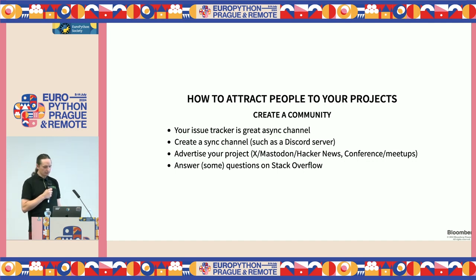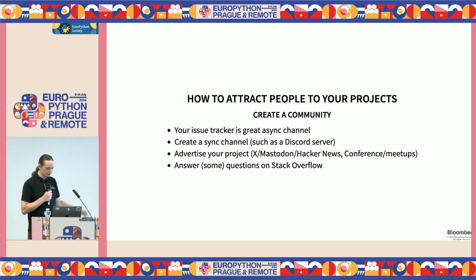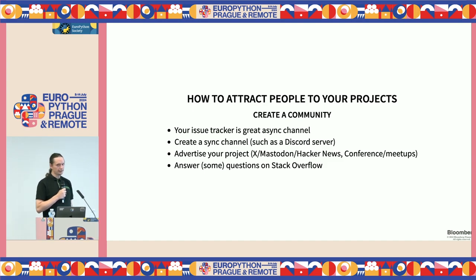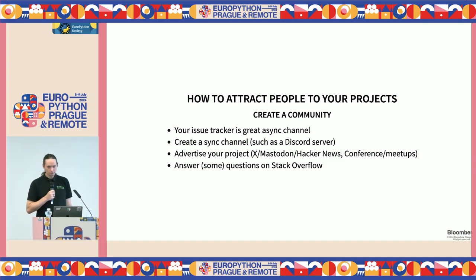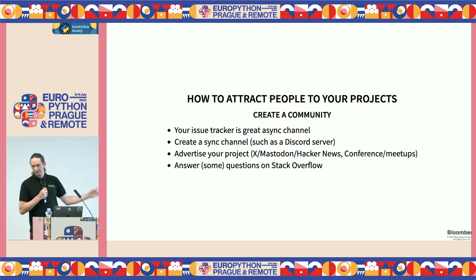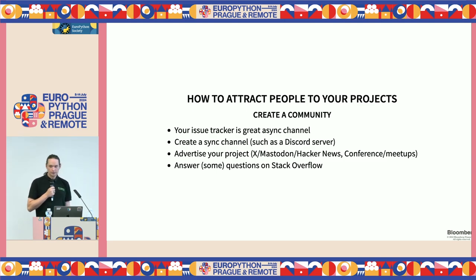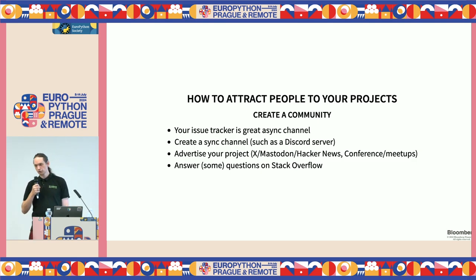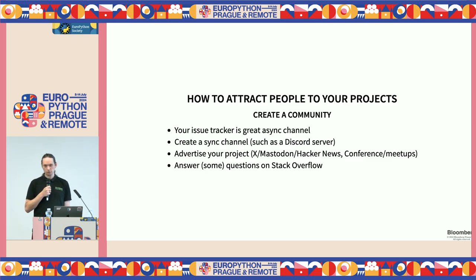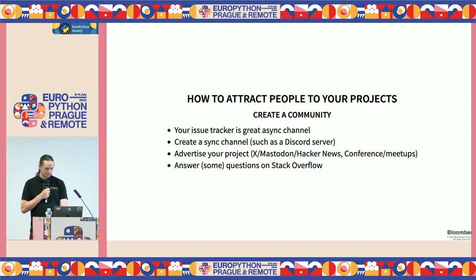How do you attract people to contribute to your project? Your issue tracker is a great async channel. You can also create sync channels like Discord servers, though that's more worthwhile once you have at least tens of thousands of users. Always advertise your project — conference talks like this one are great for that. Occasionally check Stack Overflow and answer questions there, kindly guiding users toward your issue tracker for future questions. Remember, not all questions will arrive at your issue tracker, so follow these additional channels too so people don't walk away frustrated.